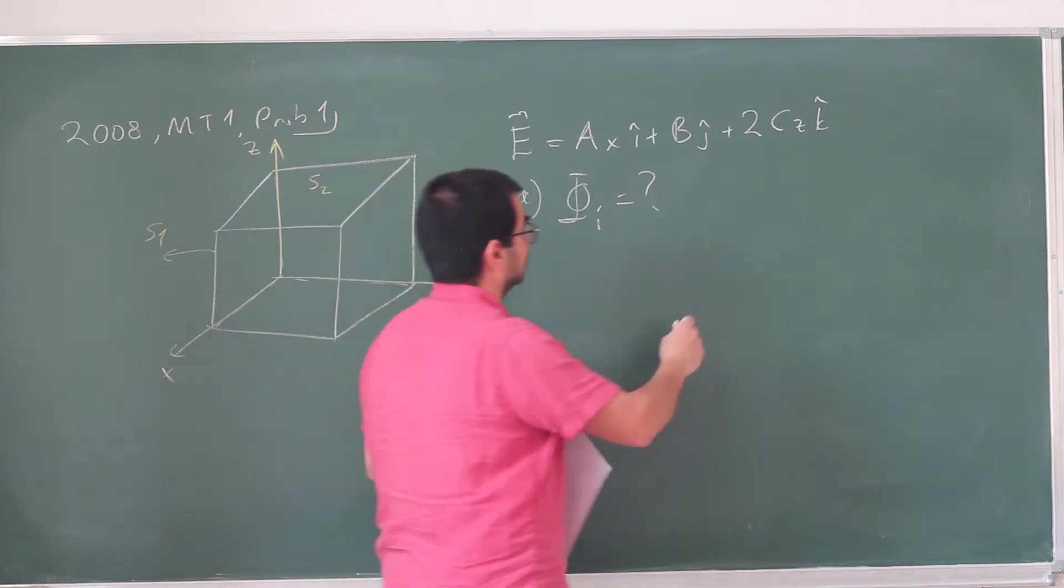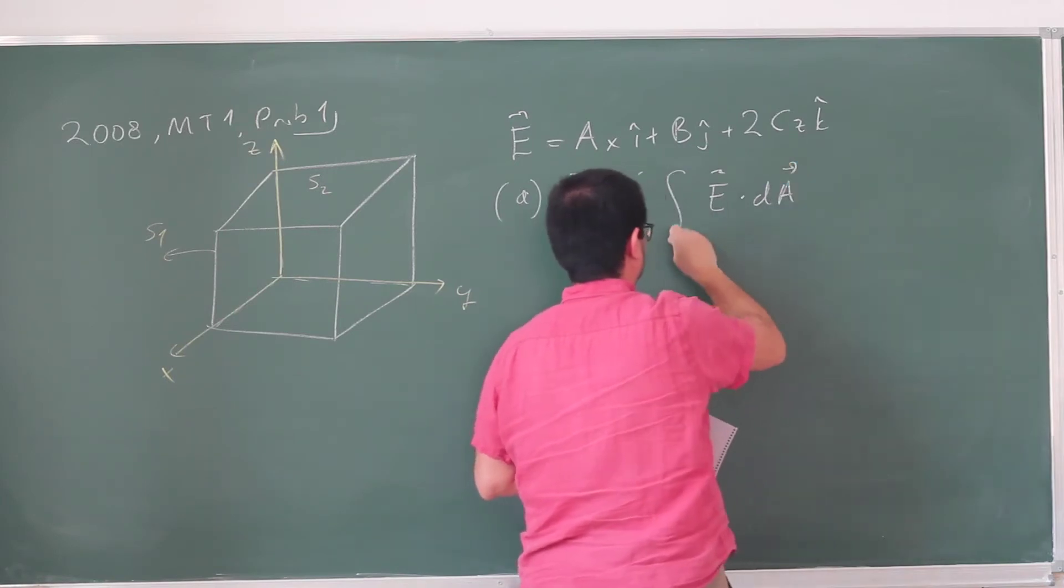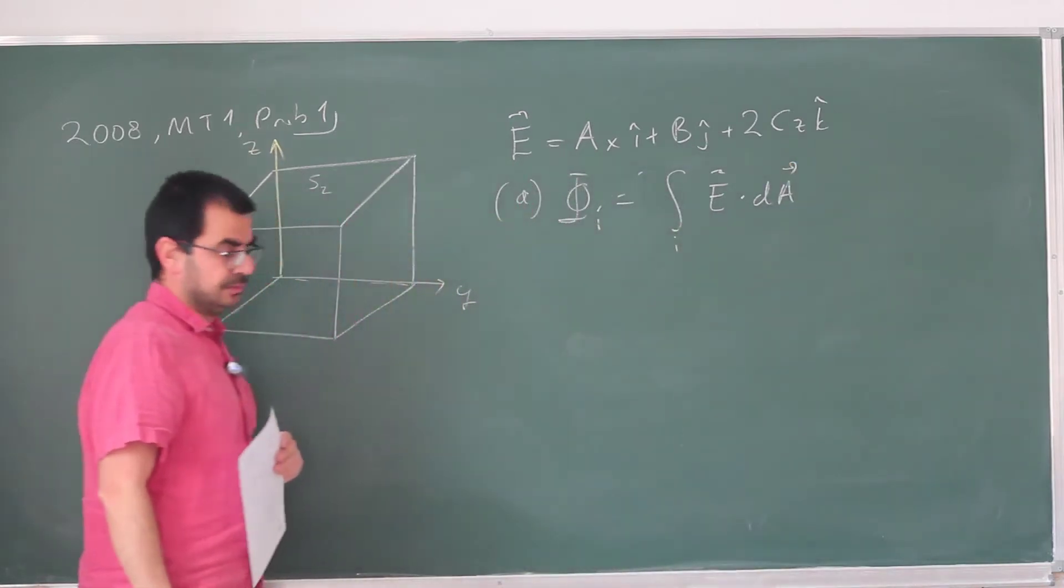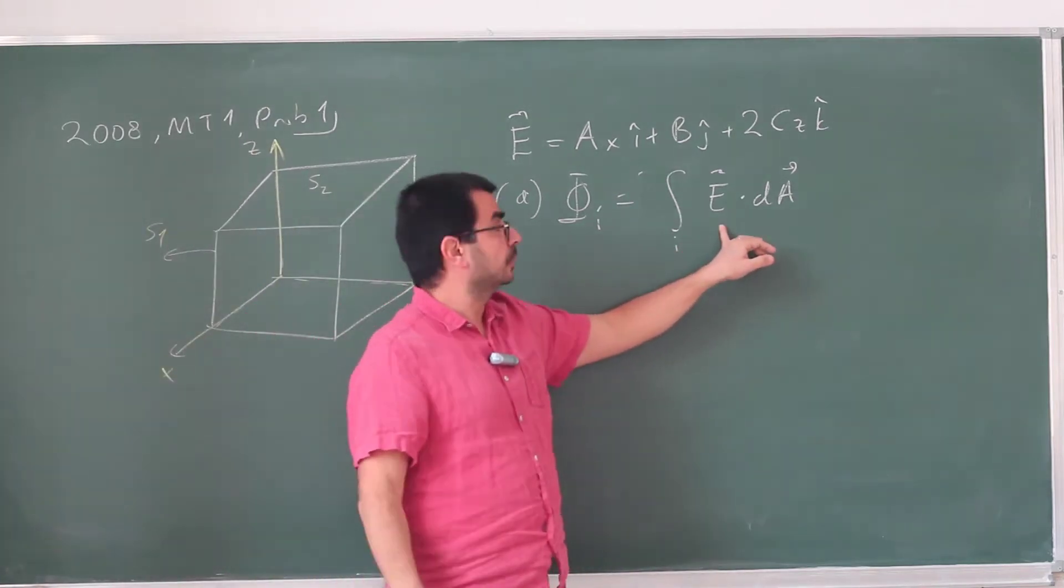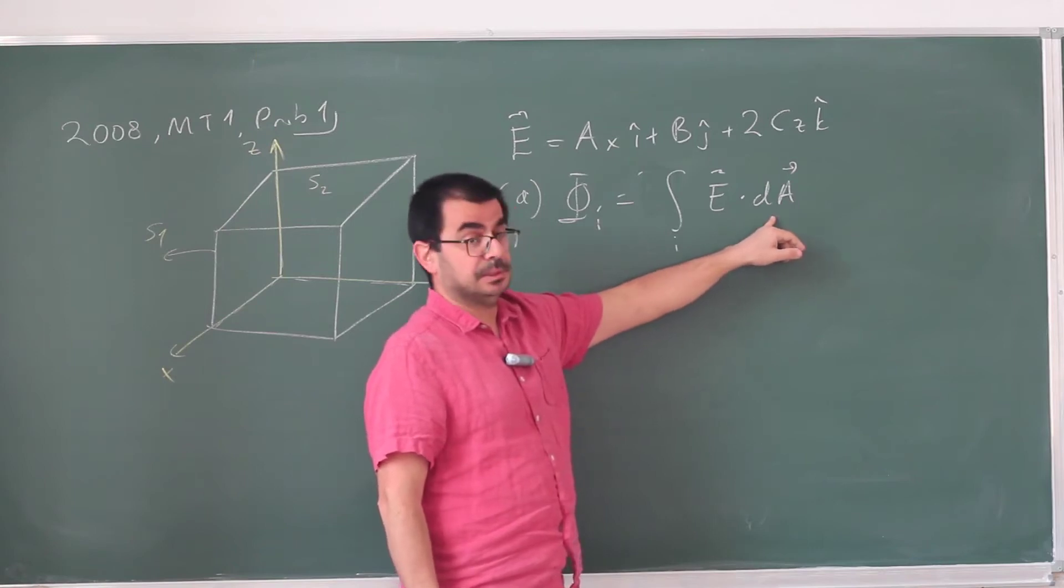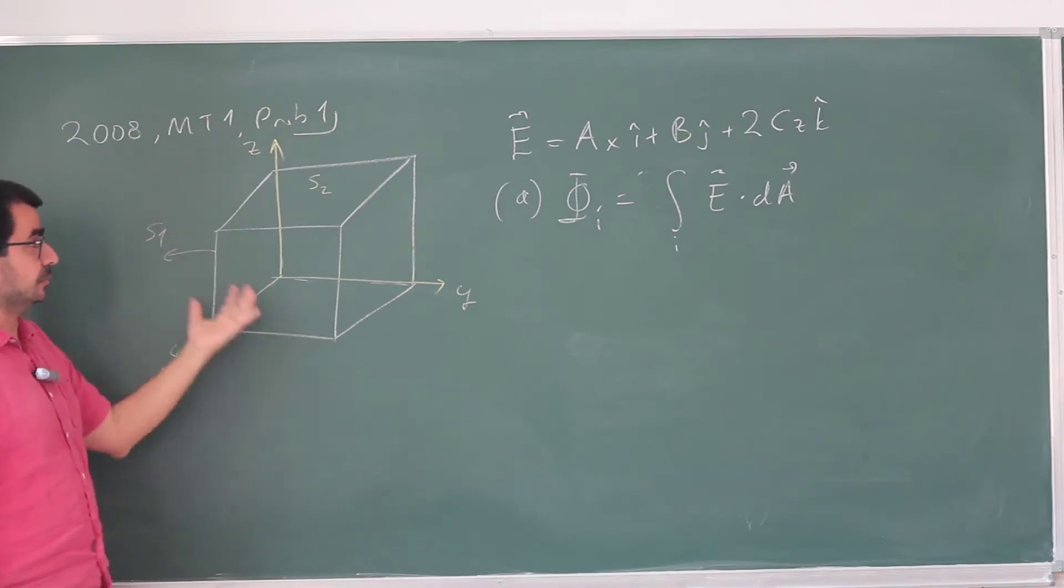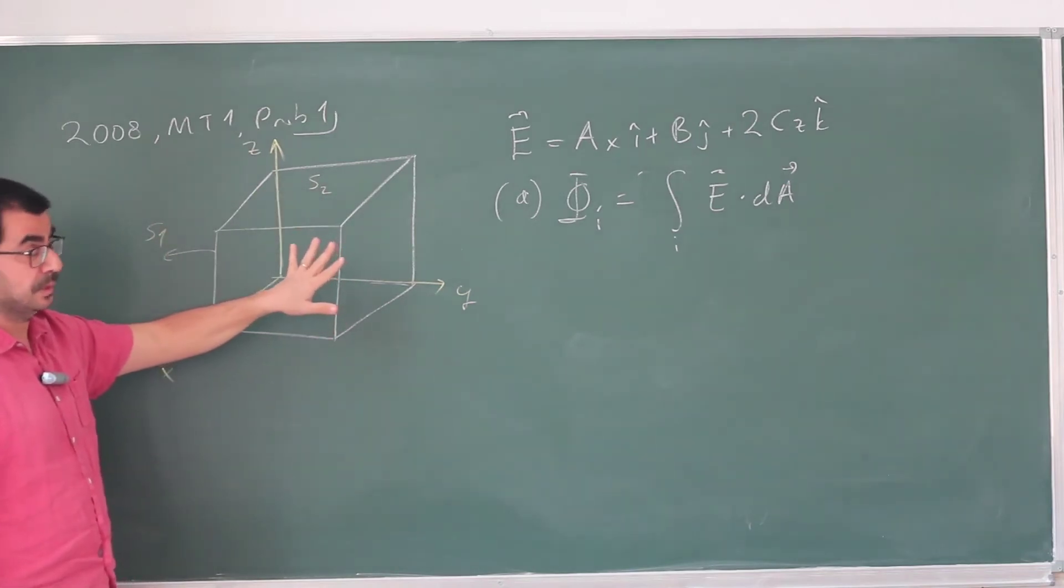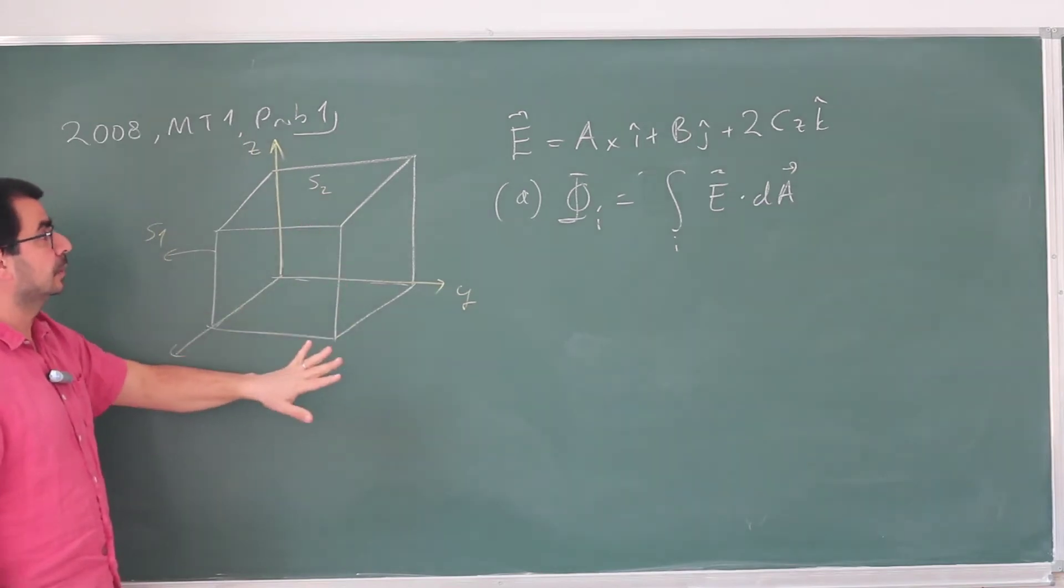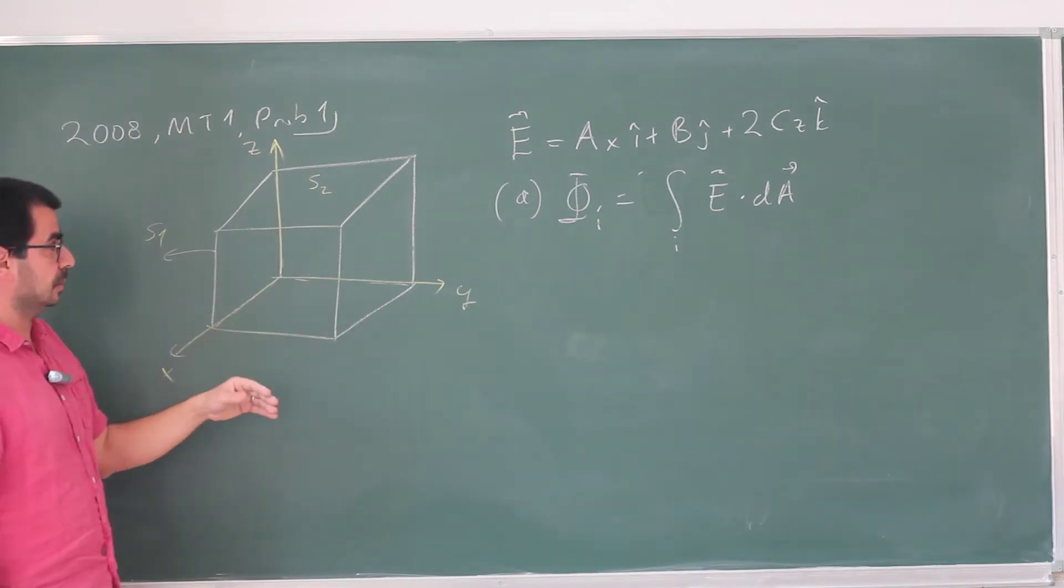We need to apply the definition of flux. The definition of flux is the integral of E dot dA over each of these faces. The direction of the electric field is fixed, but the direction of dA is generally ambiguous. So I'm going to follow the convention we fixed for closed surfaces. Even though each face of this cube is not a closed surface, I'm going to assume the surface element has the same direction as if this is just a completely closed surface.